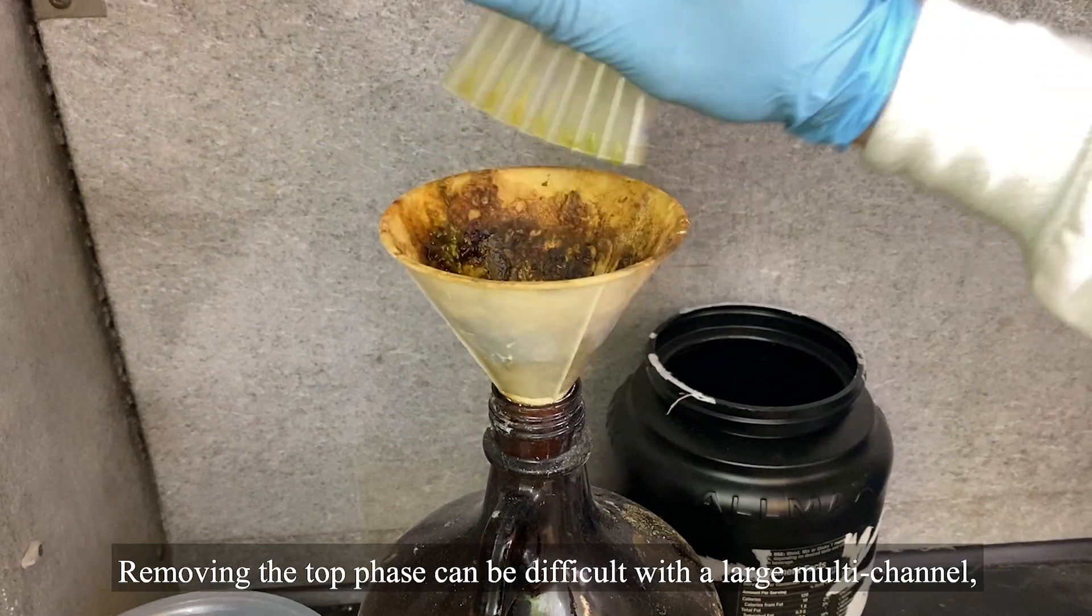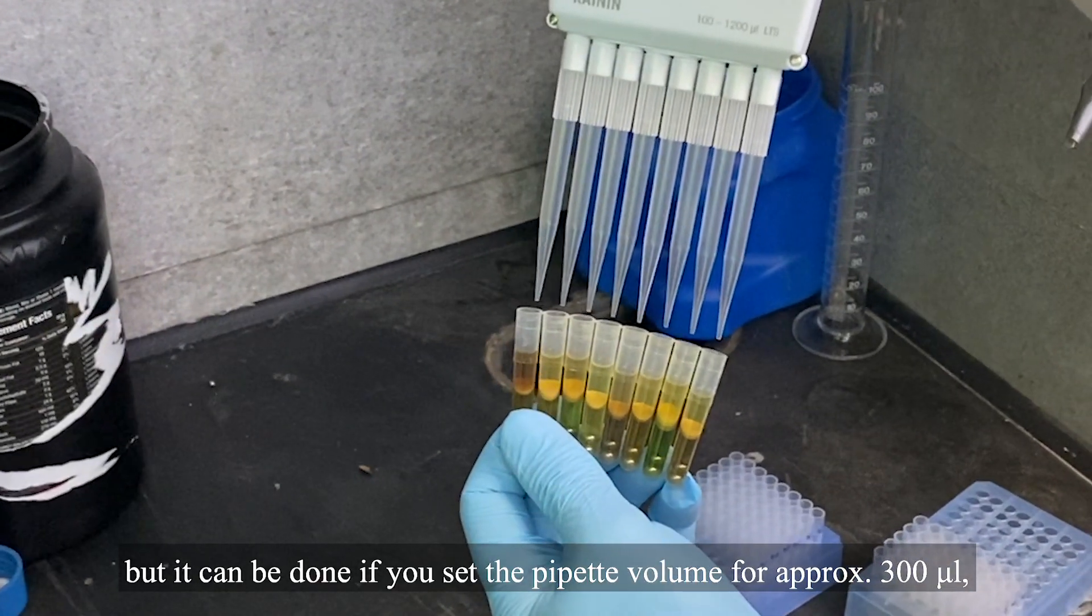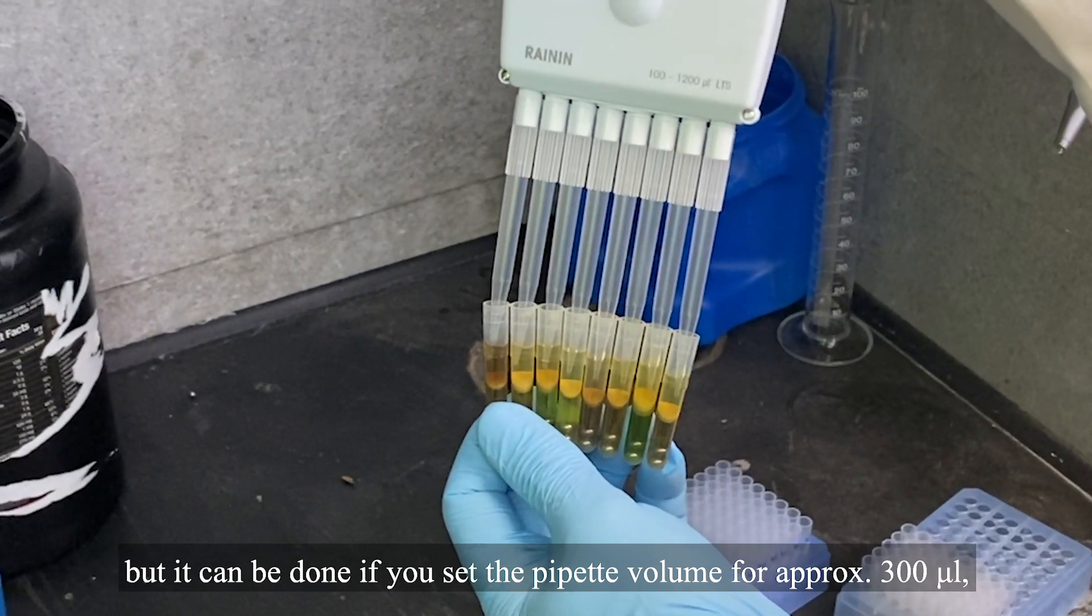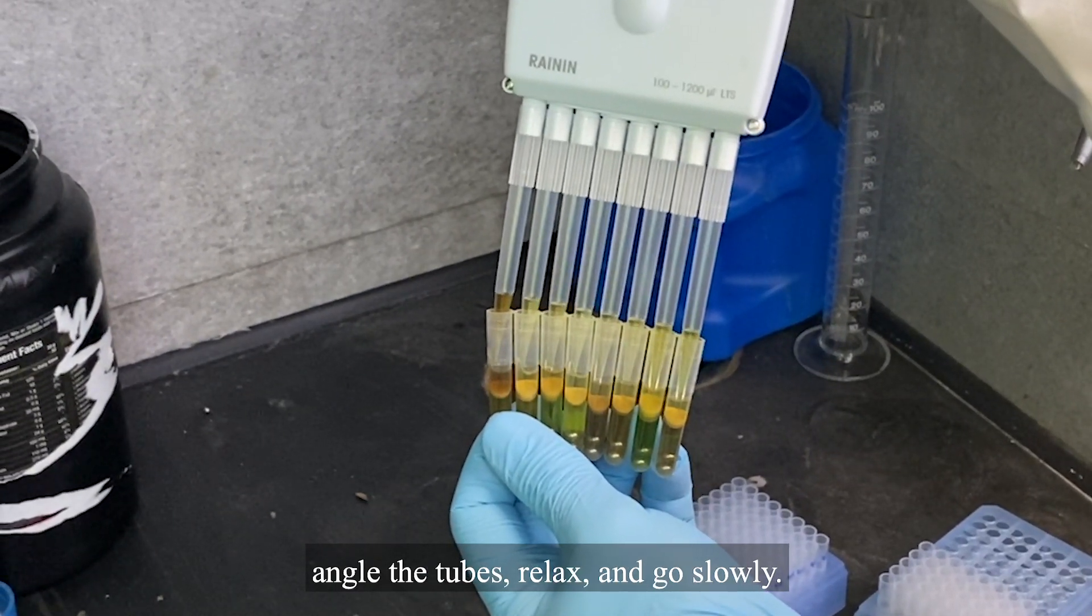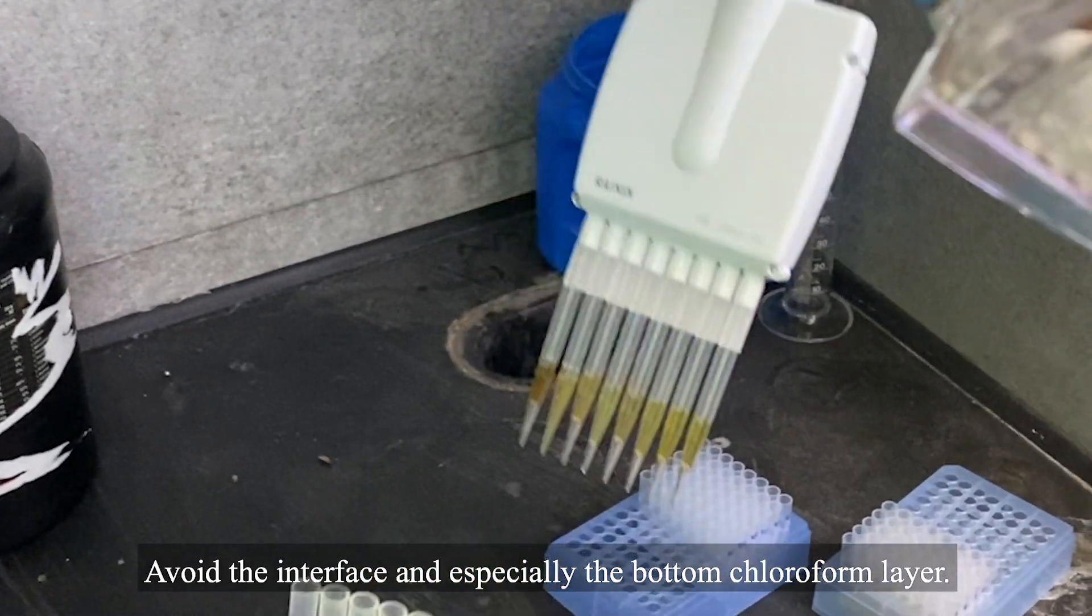Removing a top phase can be difficult with a large multi-channel, but it can be done if you set the pipette volume for approximately 300 microliters, angle the tubes, relax, and go slowly. Avoid the interface, and especially the bottom chloroform layer.